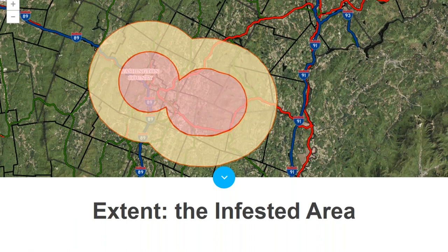In Vermont we're calling this the 'egg yolk' — the EAB infested area includes both confirmed infested areas and high-risk areas. The red areas are within five miles of a known infestation. Known infestation sites so far are Montpelier, Orange, Groton, Plainfield, and Barre. The yellow high-risk areas extend five miles from the outer edge of a confirmed infested area. This map is updated in real time at vtinvasive.org and also on the ANR Atlas.